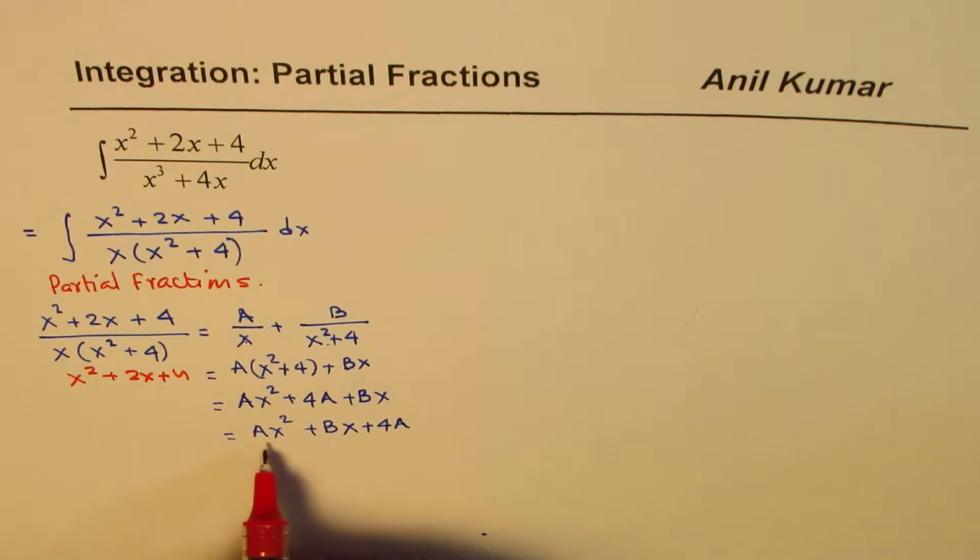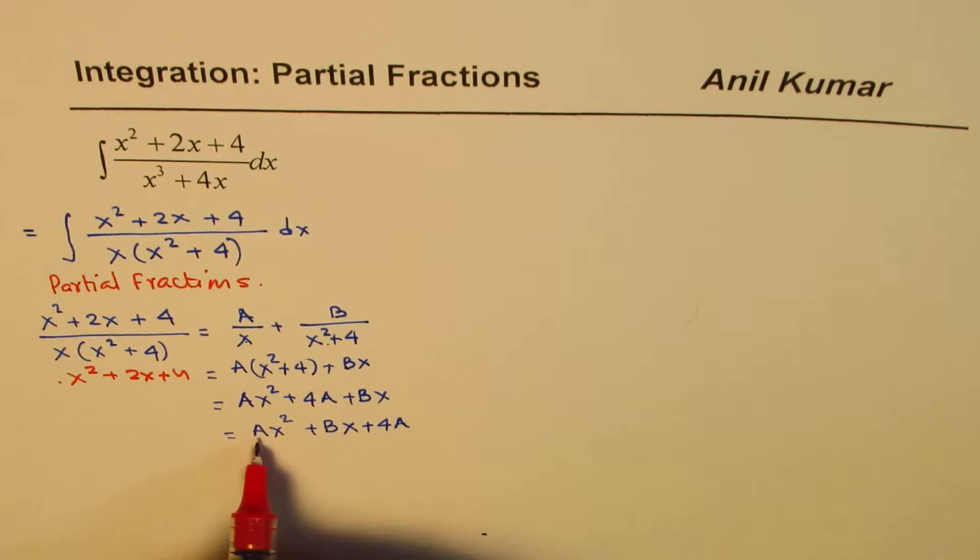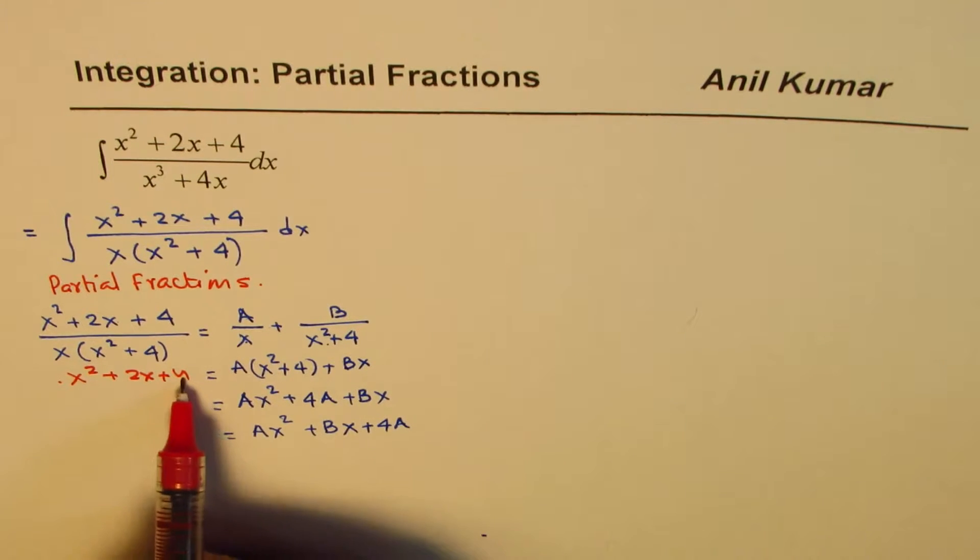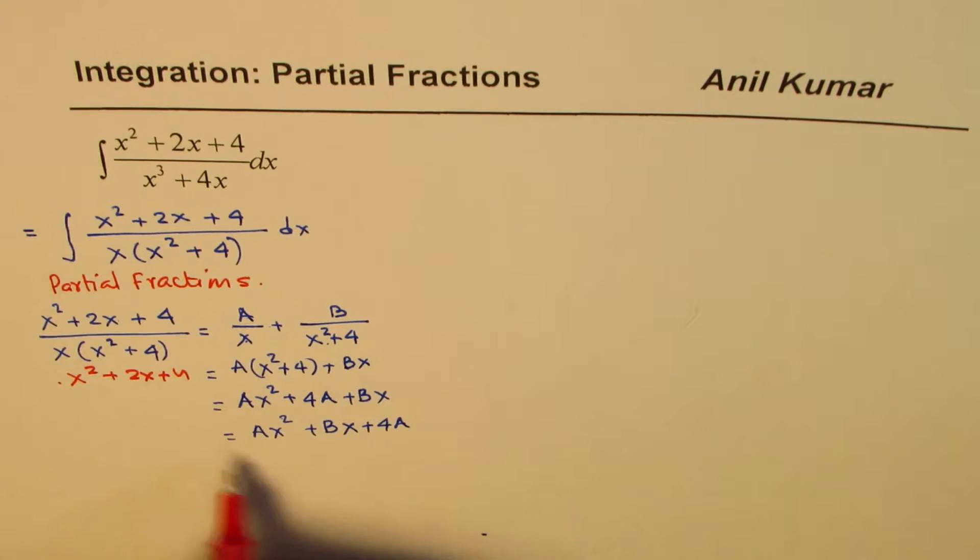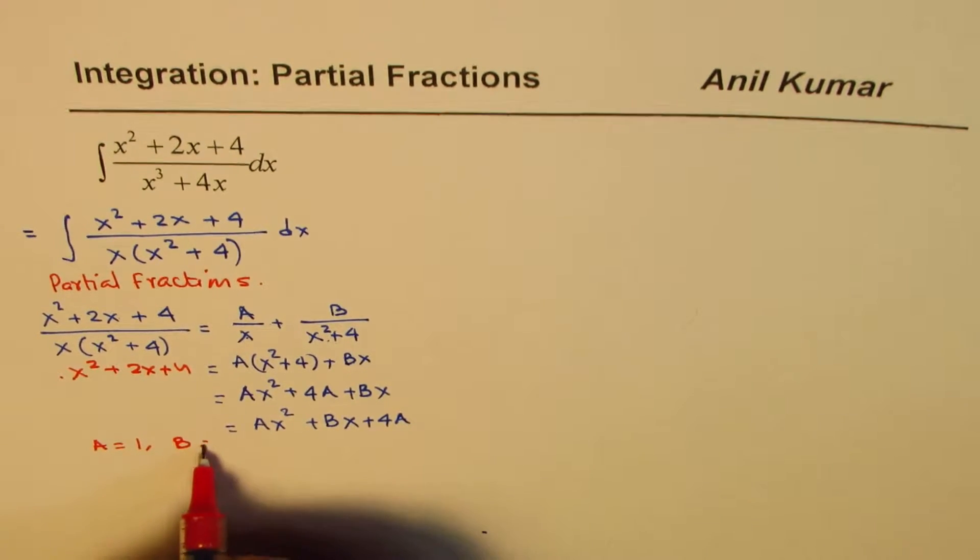So we have x squared plus 2x plus 4. Now if you compare these, then the coefficient of x squared is 1. So a should be 1. And as far as b is concerned, directly you can see b is 2. From here, you can always write that a is equals to 1 and b is equals to 2.